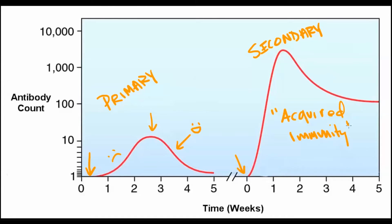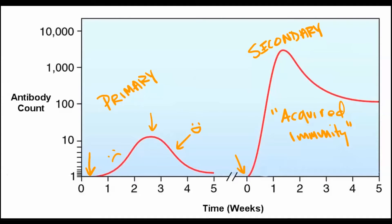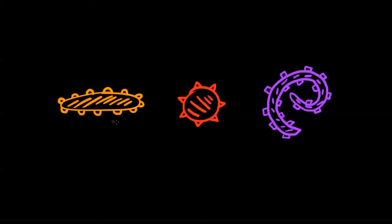In order to understand how you develop this acquired immunity, we need to get a handle on how the immune system distinguishes between different pathogens. So, here's a sampling of pathogens. Maybe this one on the left is Yersinia pestis, the bacterium that causes the plague. Maybe this in the middle is HIV, which causes AIDS. And maybe this on the right is a trypanosome, a creature which causes sleeping sickness.